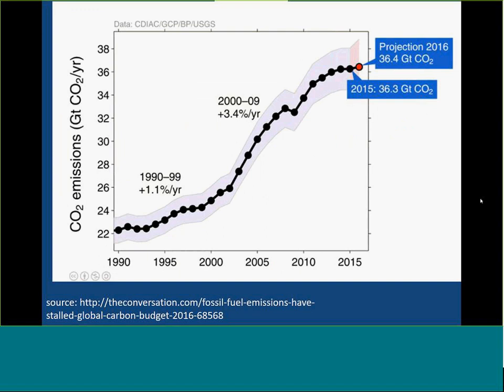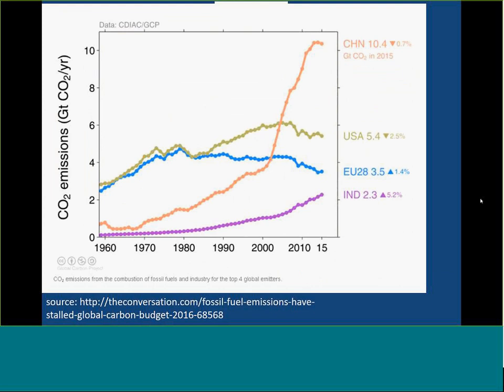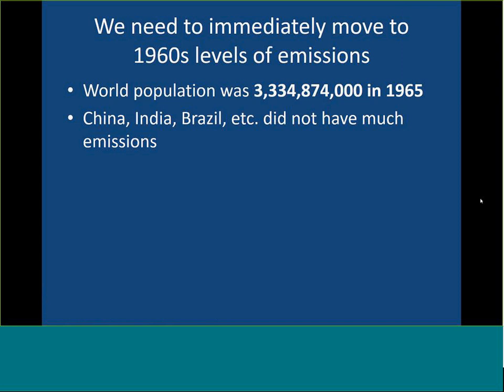Looking at graphics of emissions by region of the world, enormous growth has taken place in China and India over this period. What we need to do to reach a tolerable level would be to return to 1960s levels of emissions immediately — but the world population was only a little over 3 billion then, and India, Brazil, and other big middle-income and developing countries didn't have much emissions at that point. So it's a critical situation.